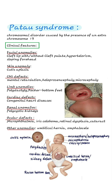Cardiac defects include congenital heart diseases. Renal anomalies include polycystic kidneys. Ocular defects include microphthalmia, iris coloboma, retinal dysplasia, and cataract.